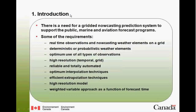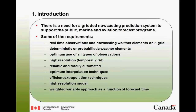In terms of introduction, there is a need for a gridded nowcasting prediction system to support different programs for the public, marine, aviation, and also air quality. The requirements for this gridded nowcasting system include: ingest real-time observations and forecasting weather elements on a grid; produce deterministic and probabilistic weather elements; have optimum use of all types of observations; a high-resolution temporal and geographical grid; a reliable and totally automated system; use interpolation and extrapolation techniques; use high-resolution models as input; and a weighted variable approach as a function of projection time.